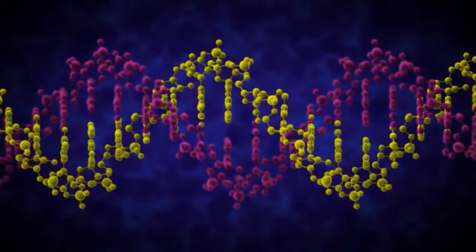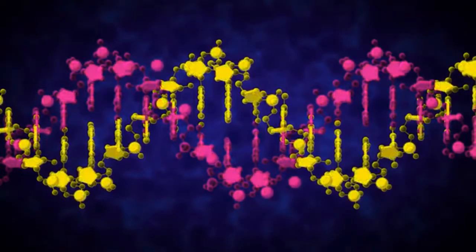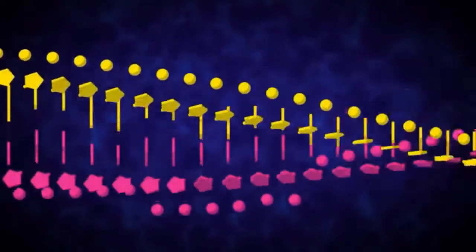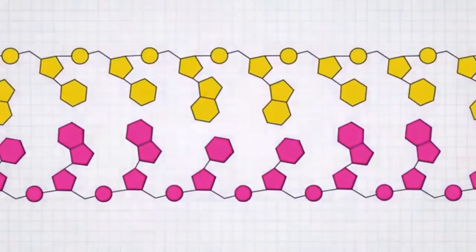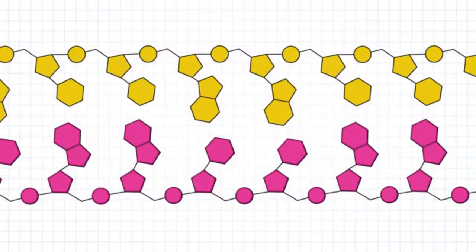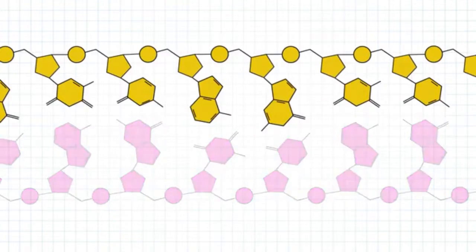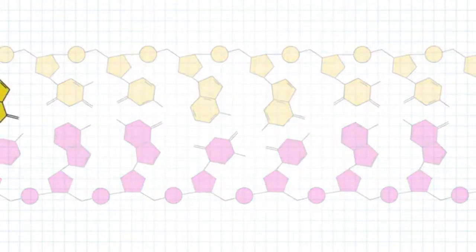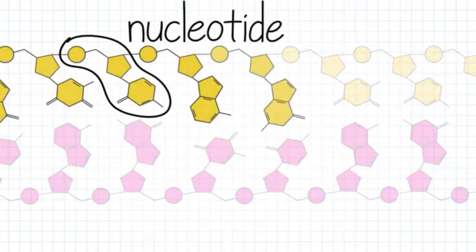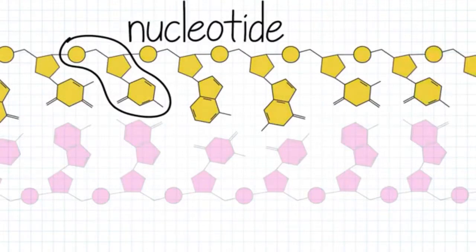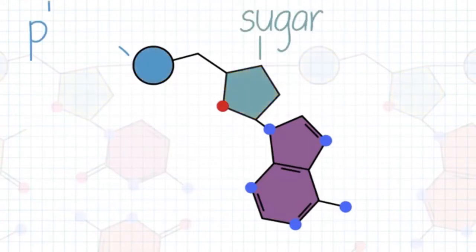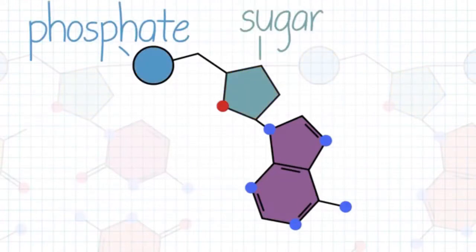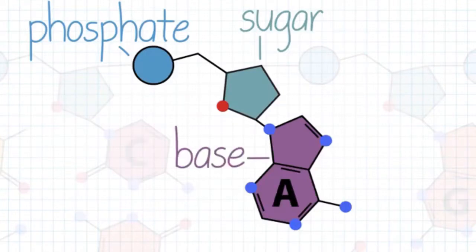Now, let's move to a more simplified representation of DNA to discuss the details. We can unwind the double helix like this, so that we can see the chemical structure inside. Each strand is a polynucleotide, meaning the strand is made up of many individual units called nucleotides. A nucleotide has three components: a 5-carbon sugar, a phosphate group, and one of four possible nitrogenous bases.